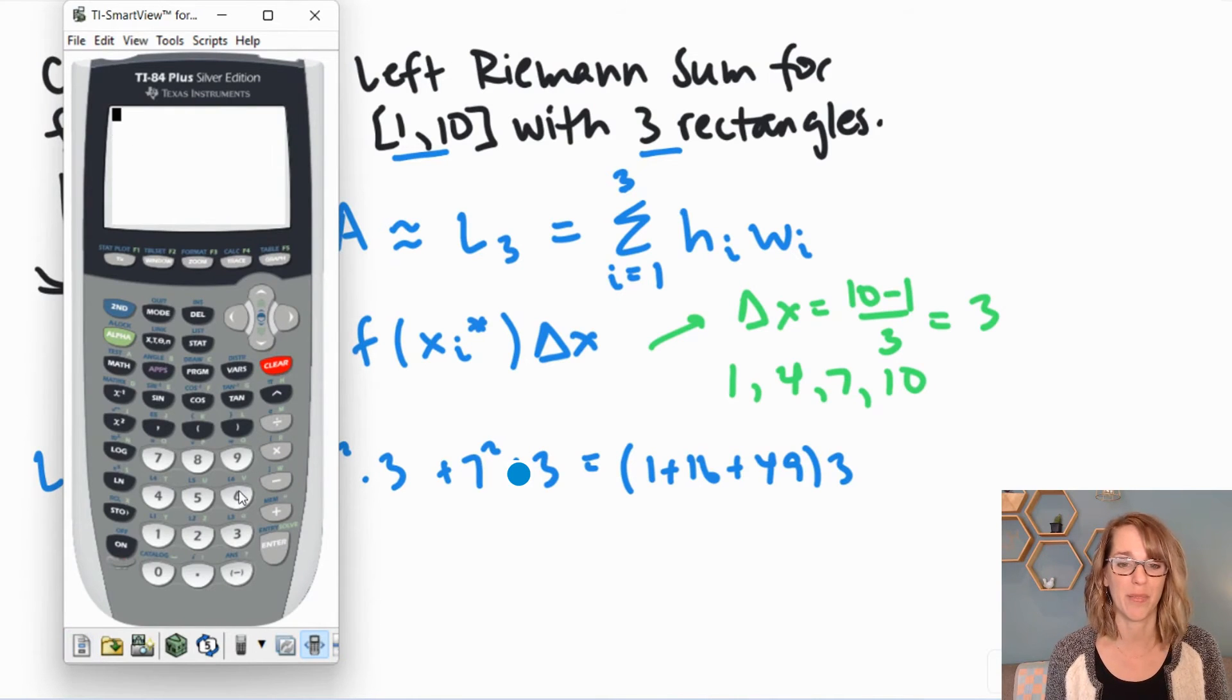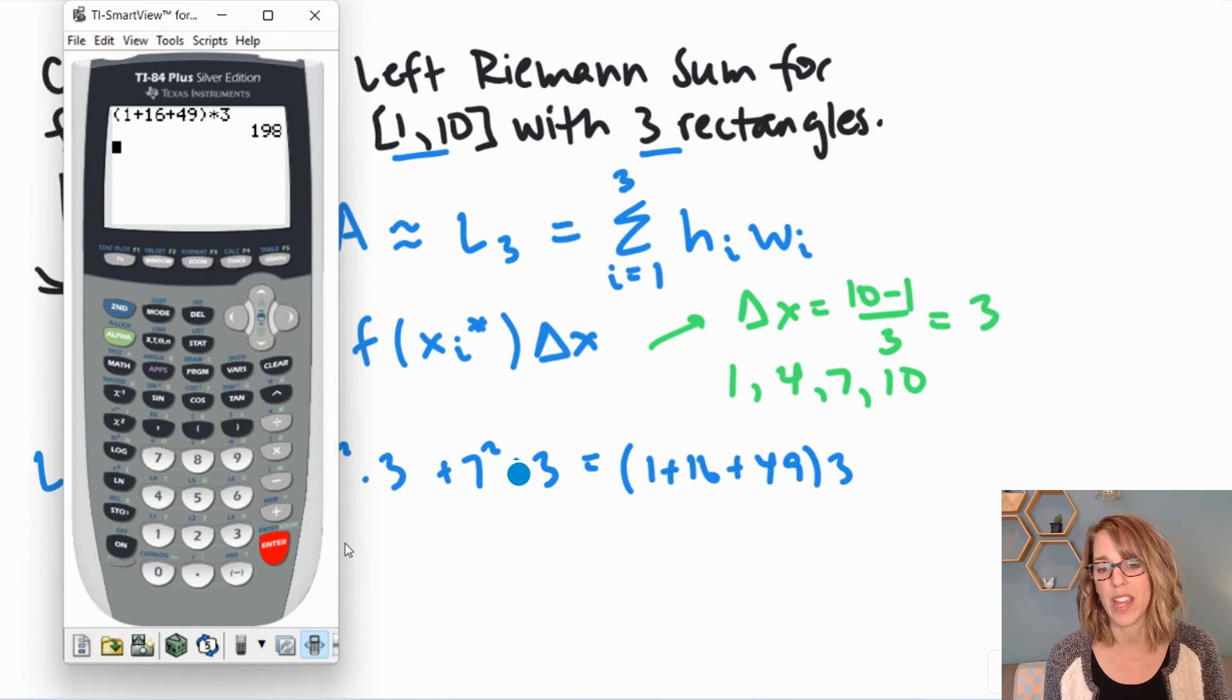If I pull that 3 out, I get 1 plus 16 plus 49 times 3. I'm going to let the calculator do the math. And in parentheses, I've got 1 plus 16 plus 49 times 3. And we get 198.